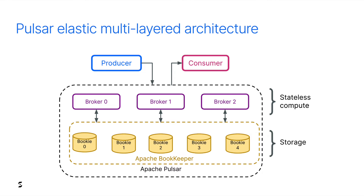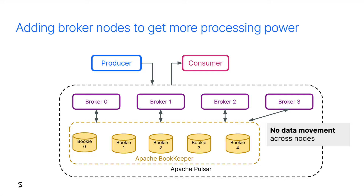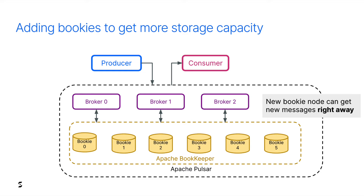The bookies are Apache Bookkeeper nodes. If I need more processing power on my cluster, I'll add more brokers. Because their state is stored in the Bookkeeper tier, I can add a new broker and that load can then be migrated to another broker. Pulsar will take care of all the moving of connections, and this is transparent to your application. Compared to Kafka, adding a new broker would require managing the movement of all the data for rebalancing. There is no heavy partition rebalance here and no data movement. When we need to store more data, we just add more bookies. As soon as you add a new bookie, it's immediately eligible for getting new messages right away — there is no data rebalance.